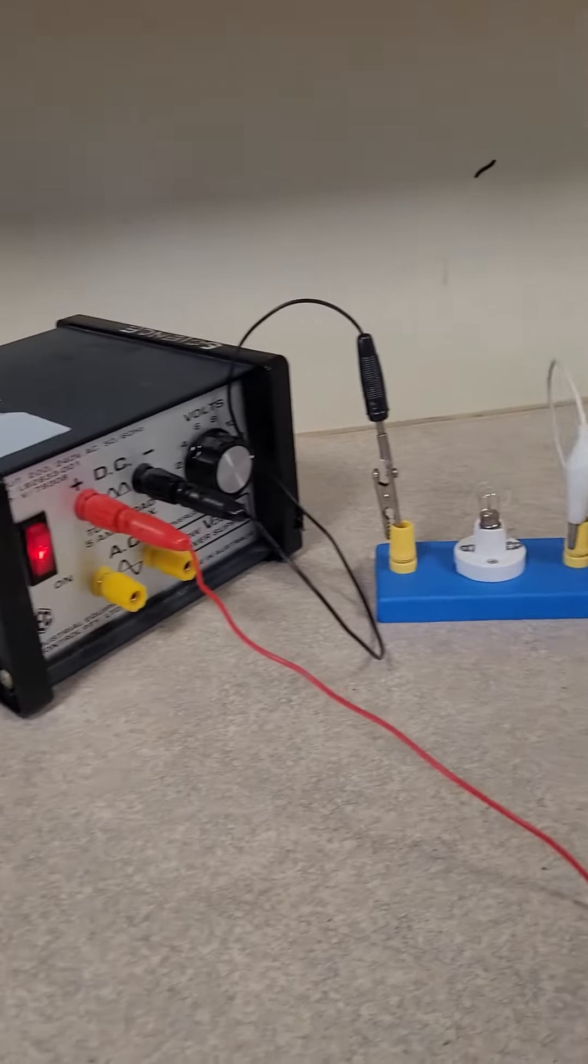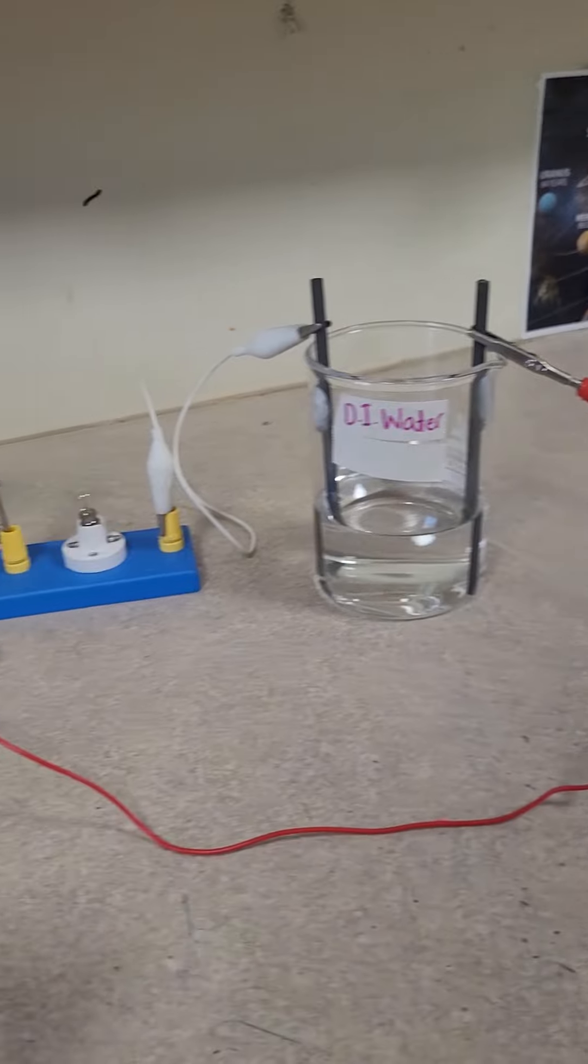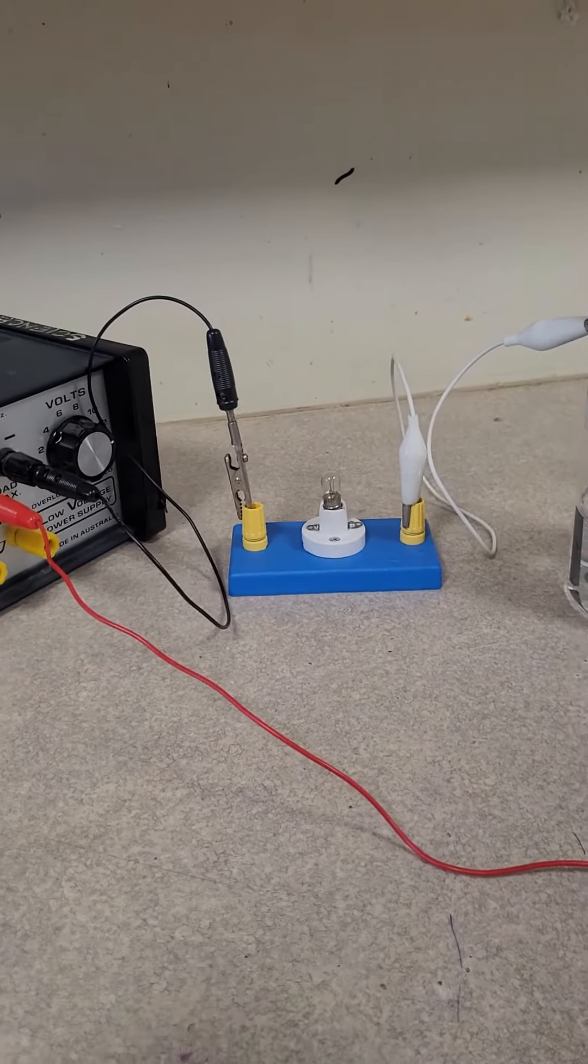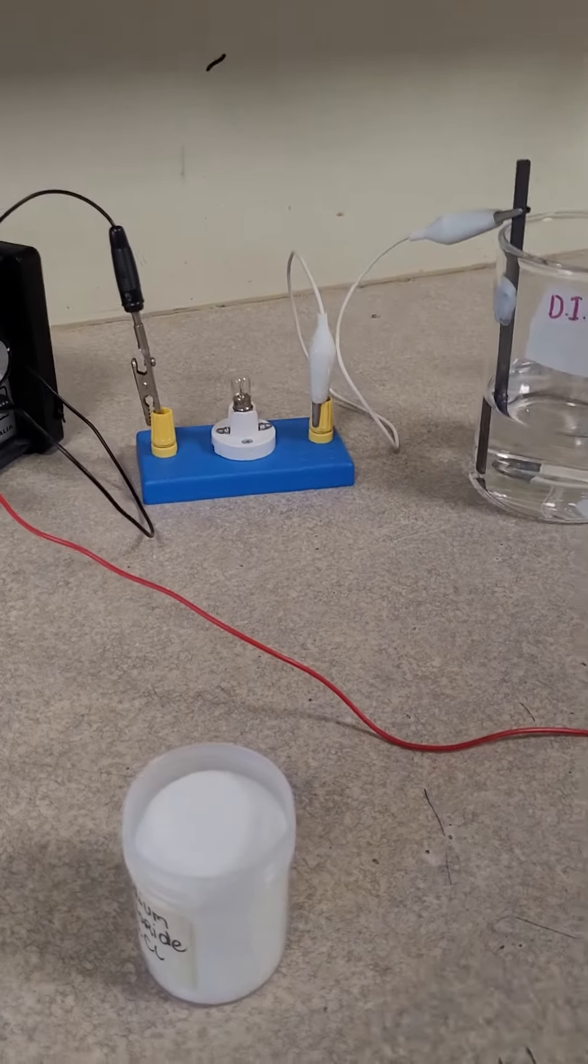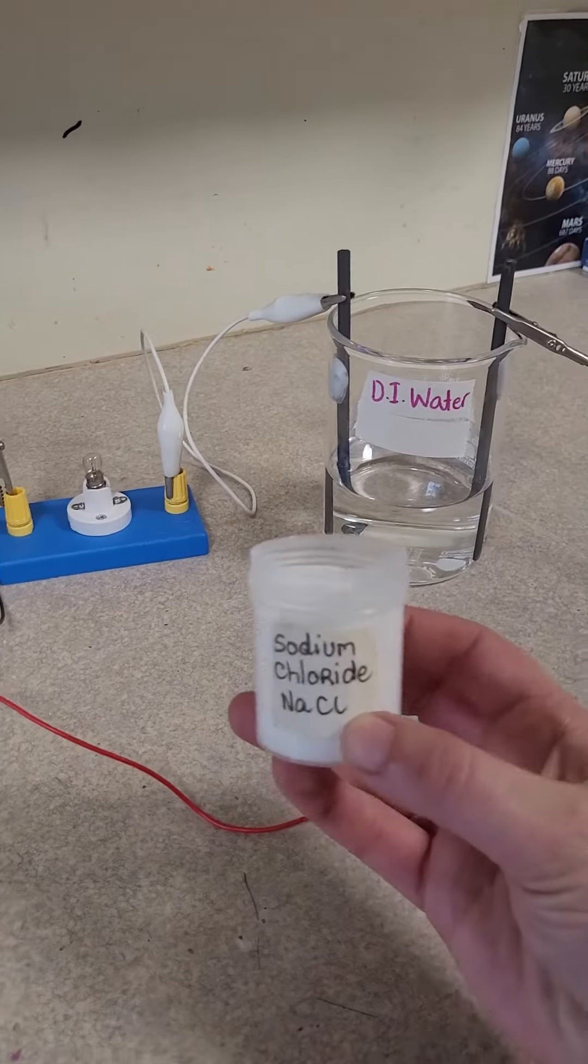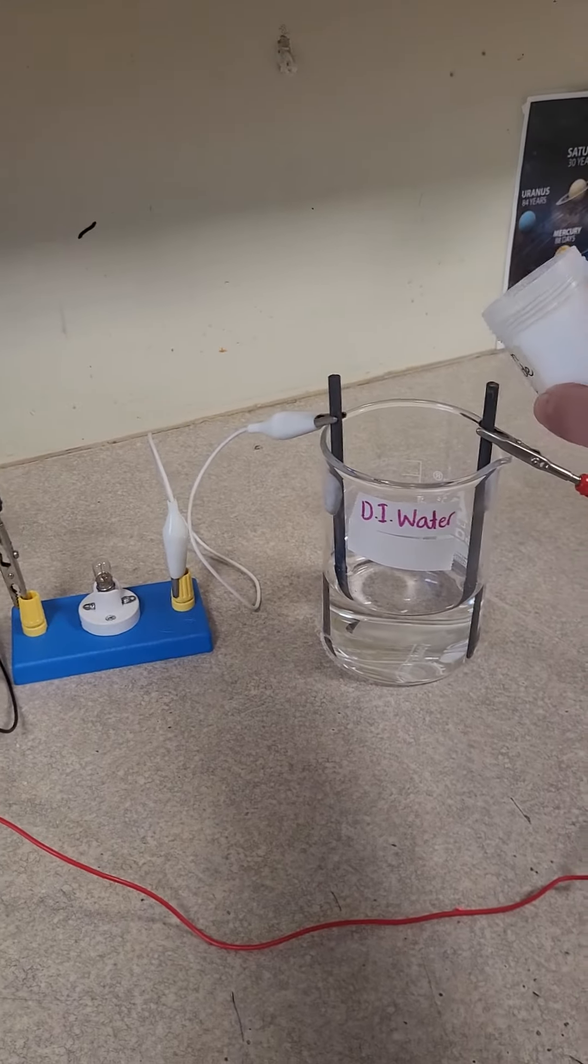Okay, so we have the circuit hooked up to the water. Still no light globe. What if I try and put some sodium chloride into the water and dissolve it?